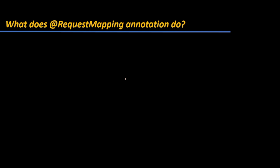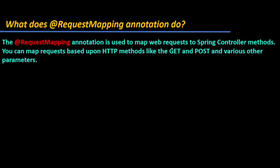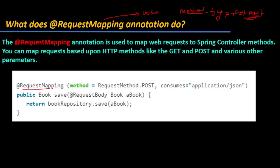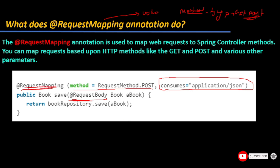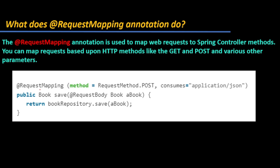The next question is: what does the @RequestMapping annotation do? @RequestMapping is used to map a web request to a Spring controller method. You can map requests based on HTTP method — like GET or POST — because in @RequestMapping you can give a value and a method type. For example, you can say @RequestMapping with method equal to RequestMethod.POST and consume application/json with @RequestBody.